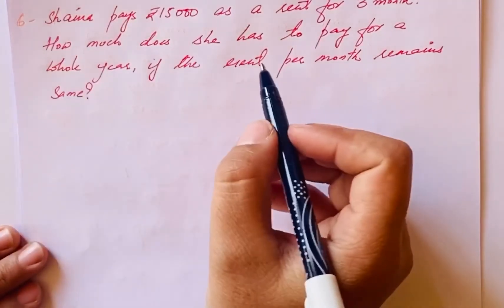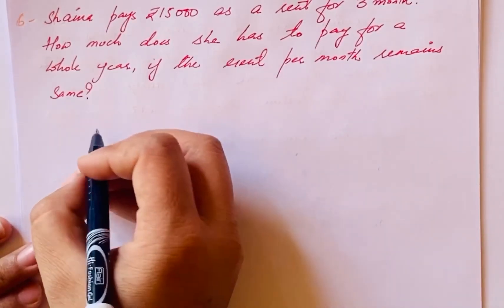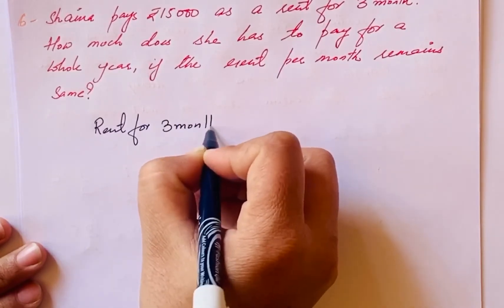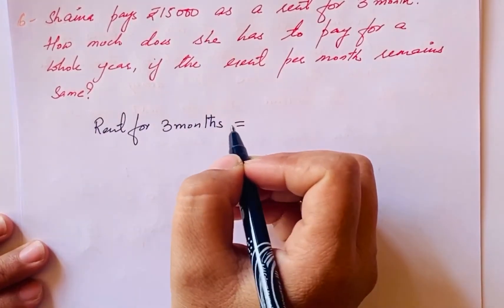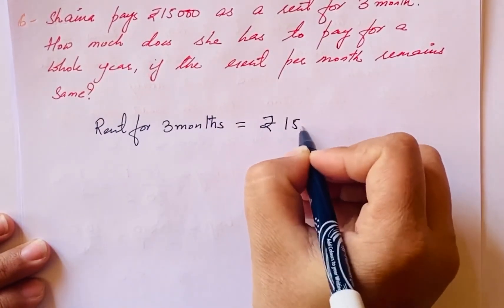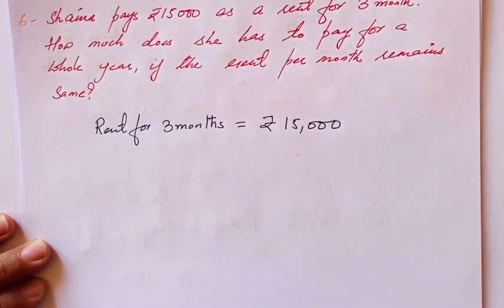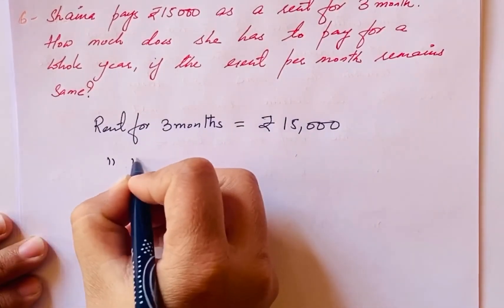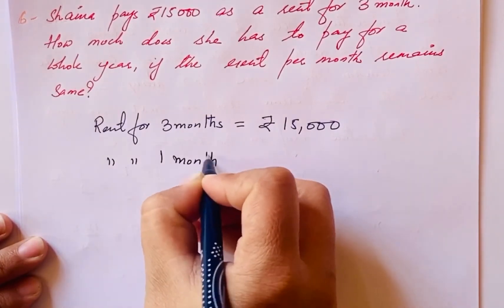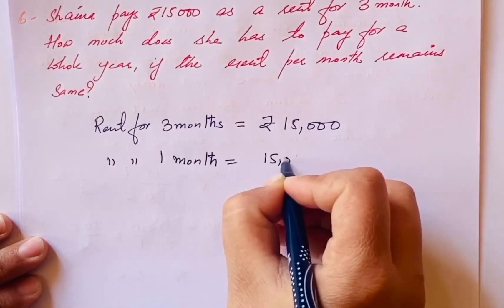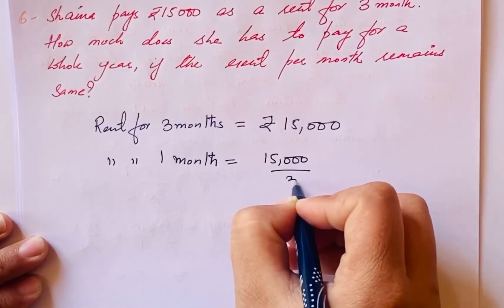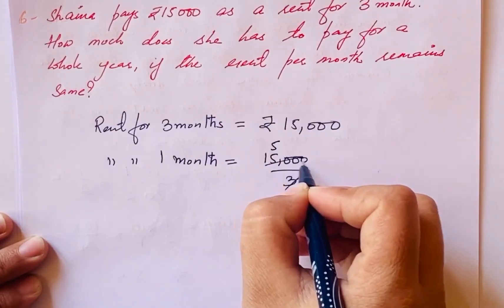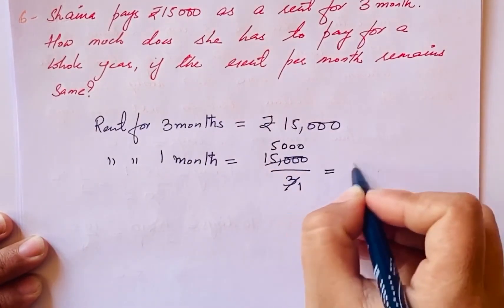What's given? Rent for three months. Three months' rent is rupees 15,000. We'll calculate for one month. Rent for one month: 15,000 divided by 3. Three ones are three, three fives are fifteen, zeros remain. This is 5,000.